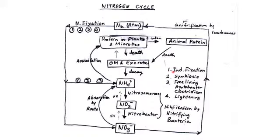Number one: industrial fixation, also known as the Haber-Bosch process, in which we apply high temperature and high pressure to fix atmospheric nitrogen into ammonia.